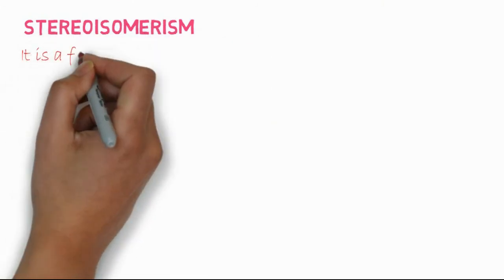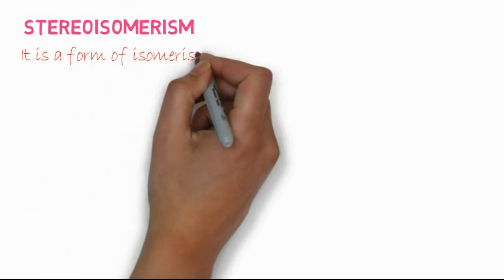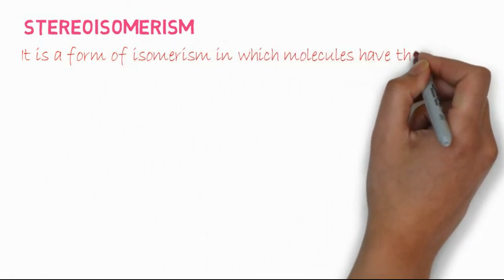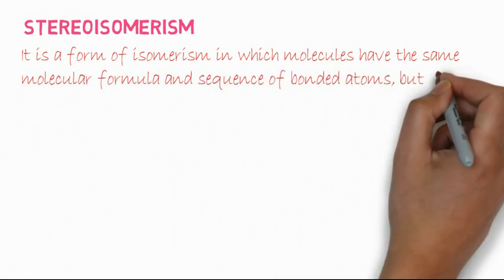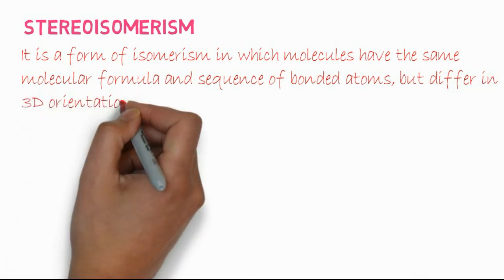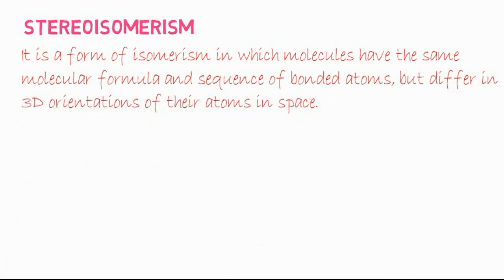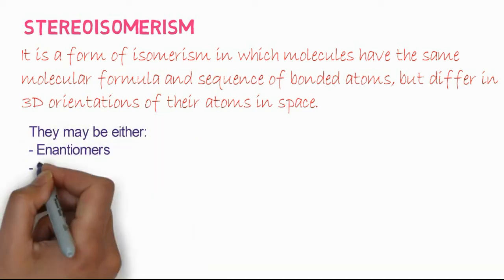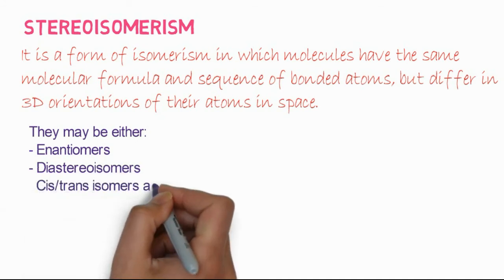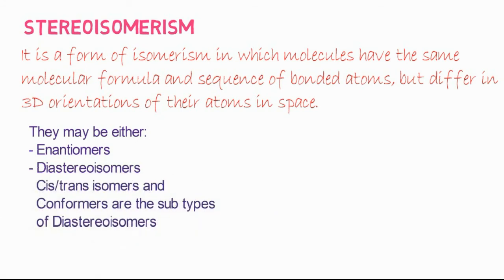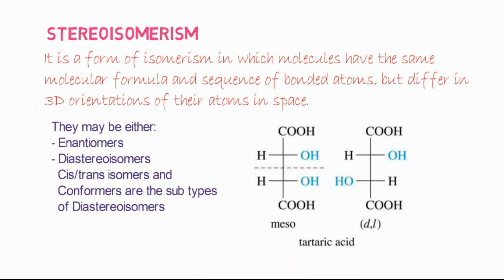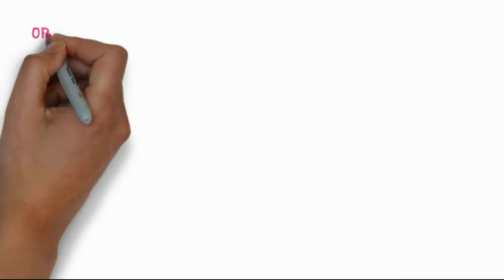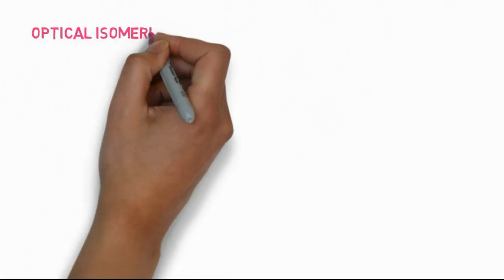Stereoisomerism is a form of isomerism in which molecules have the same molecular formula and the same sequence of bonded atoms, but differ in the three-dimensional orientation of their atoms in space. They may be either enantiomers or diastereomers. Diastereomers may include cis-trans isomers, and conformational isomers are also known as conformers.